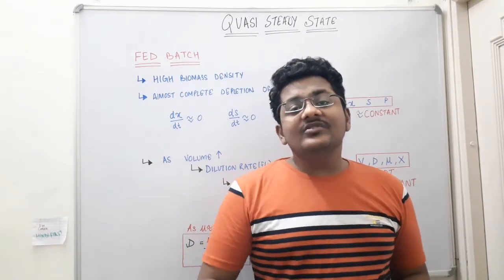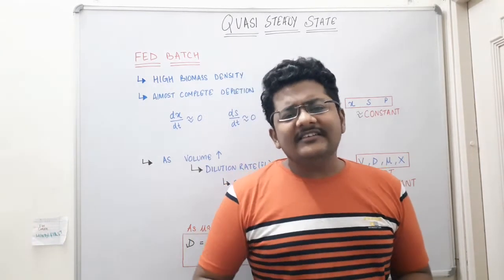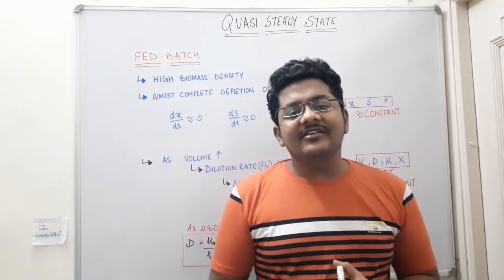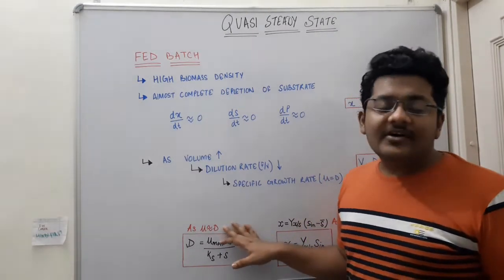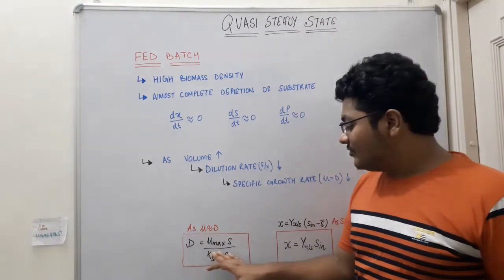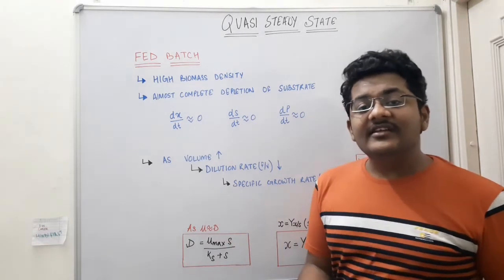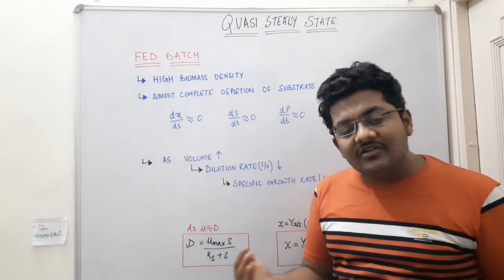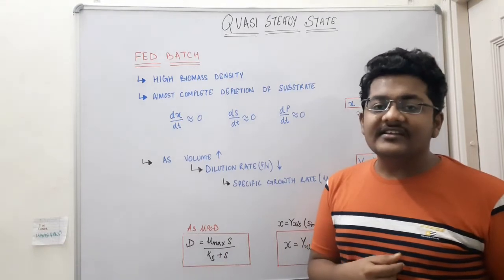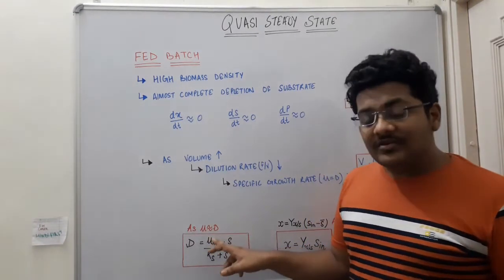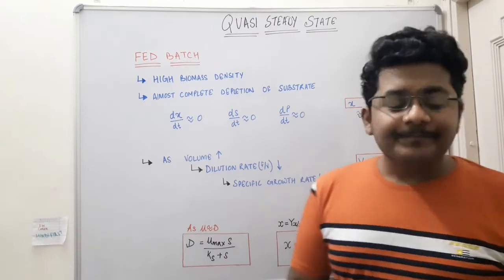We study quasi steady state so that we can easily calculate yield, biomass production, dilution rate, maximum specific growth rate, and substrate concentration in fed batch culture. Under quasi steady state, mu is approximately equal to dilution rate D. Therefore, D = mu_max · S / (K_S + S), which is the same Monod equation used in continuous stirred tank reactors at steady state — we apply those same terms here under quasi steady state.